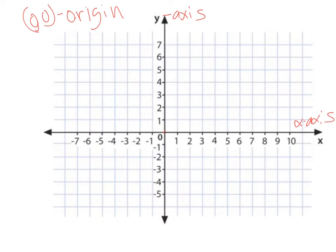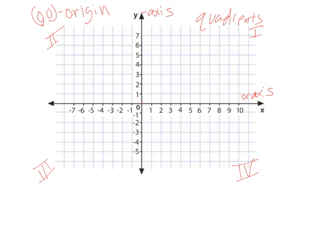You then have your quadrants. This is quadrant 1, 2, 3, and 4. And this whole thing is called the Cartesian coordinate plane, like from the essential question.